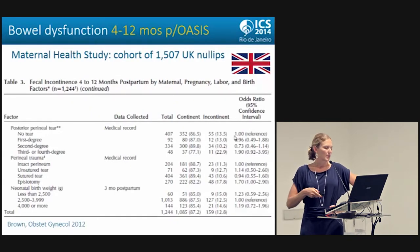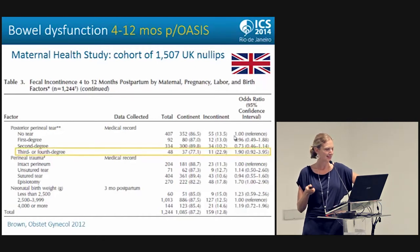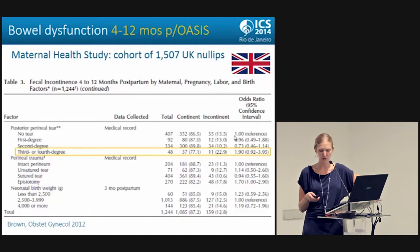A UK study looked at women between 4 and 12 months after OASIS and assessed whether they were continent or incontinent at follow-up. 23% of women who had a third or fourth degree laceration had incontinence at the 4–12 month period, versus a much lower prevalence in women who had no tear, first degree, or second degree tear. This was the only statistically significant factor in the multivariate analysis of over 1,500 women.